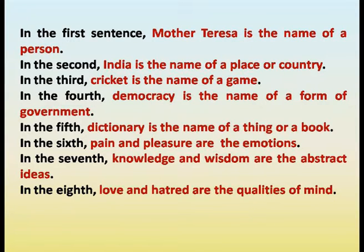In the first sentence, Mother Teresa is the name of a person. In the second, India is the name of a place or country. In the third, cricket is the name of a game. In the fourth, democracy is the name of a form of government. In the fifth, dictionary is the name of a thing or a book. In the sixth, pain and pleasure are emotions. In the seventh, knowledge and wisdom are abstract ideas. In the eighth, love and hatred are qualities of mind.